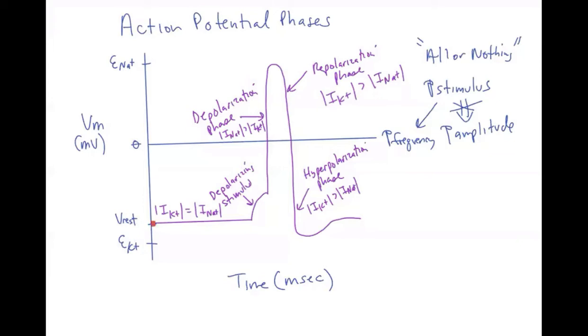Notice that the membrane potential is stable. It has a slope of zero over time. That's because in our simplified model here, the potassium current, which is outward, is equal in magnitude to the inward sodium current. So we put absolute values around here just to say we're not going to worry about the sign because potassium currents are positive and sodium currents are negative.